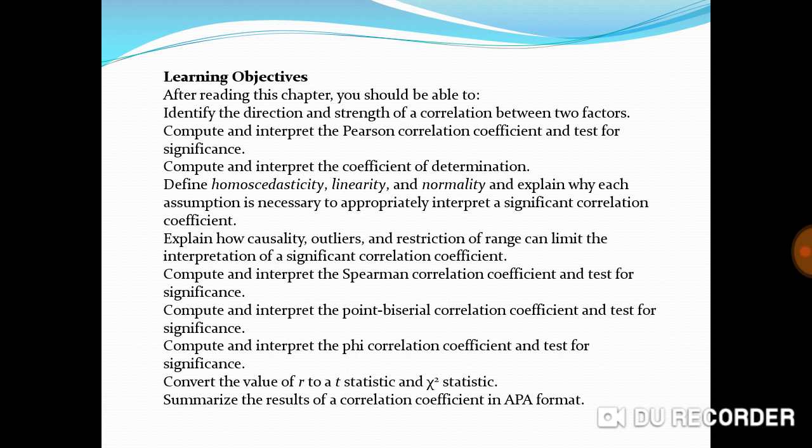Explain how causality, outliers, and restriction of range can limit the interpretation of a significant correlation coefficient.